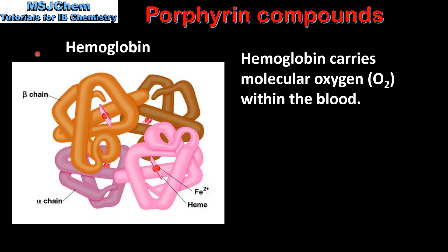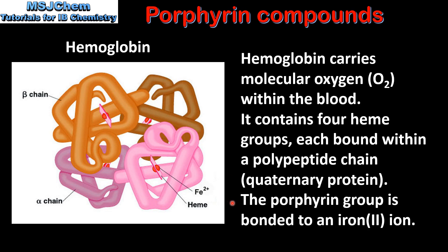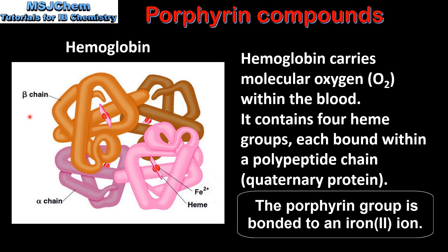Finally we look at the structures of hemoglobin and myoglobin, starting with hemoglobin. Hemoglobin carries molecular oxygen within the blood. It contains four heme groups each bound within a polypeptide chain. Because hemoglobin has four polypeptide chains it is classified as a quaternary protein. In hemoglobin the porphyrin group is bonded to an Fe²⁺ ion. As you can see it contains four heme groups each bound within a polypeptide chain.